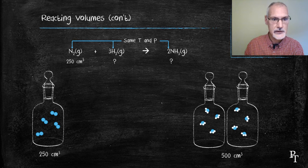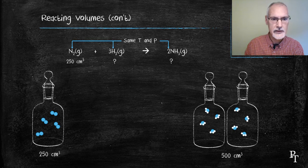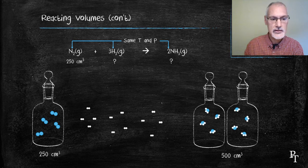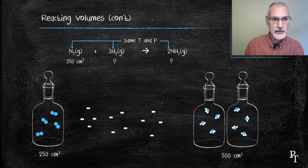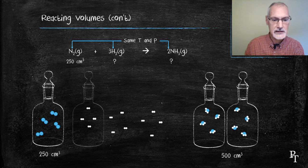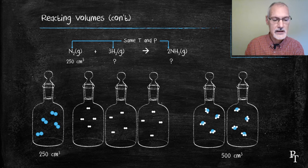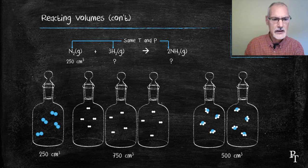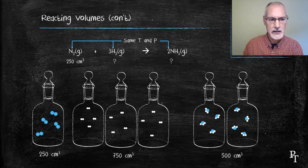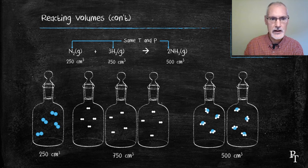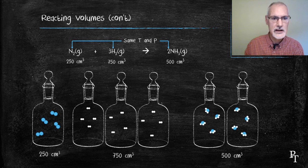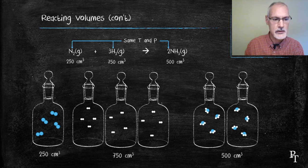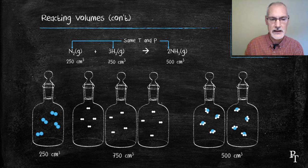As far as the hydrogen is concerned it reacts in a one to three ratio so four particles of nitrogen would require 12 of oxygen. That 12 would exactly fit into three containers, giving me 750 cubic centimeters. So I can see from up above that the volumes of the gases are in exactly the same ratio as the stoichiometric coefficients. The one to three to two is exactly the same ratio as 250 750 to 500.